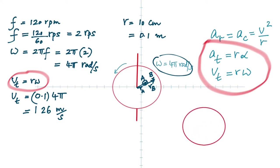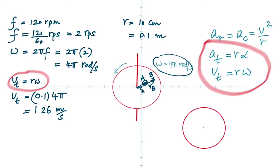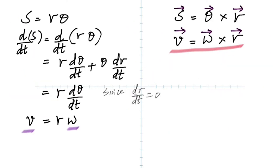Let me draw it for you. So that's rotation: you have a tangential acceleration and you have a radial acceleration — they should be at 90 degrees. The radial acceleration is always going to be there. But tangential acceleration only exists if omega is changing.